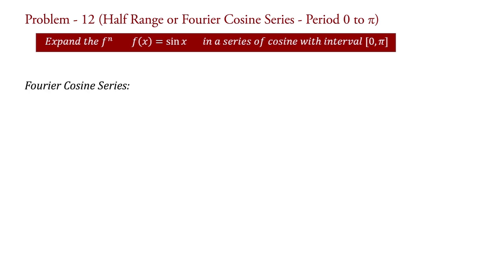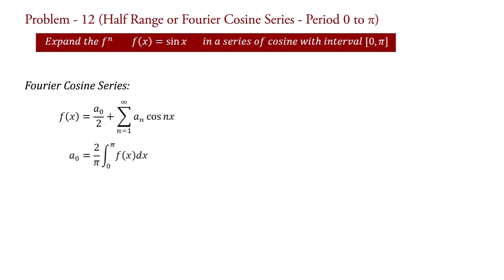The Fourier cosine series is f(x) = a₀/2 + summation from n=1 to infinity of aₙ cos(nx), where a₀ = (2/π) integral from 0 to π of f(x) dx, and aₙ = (2/π) integral from 0 to π of f(x) cos(nx) dx.